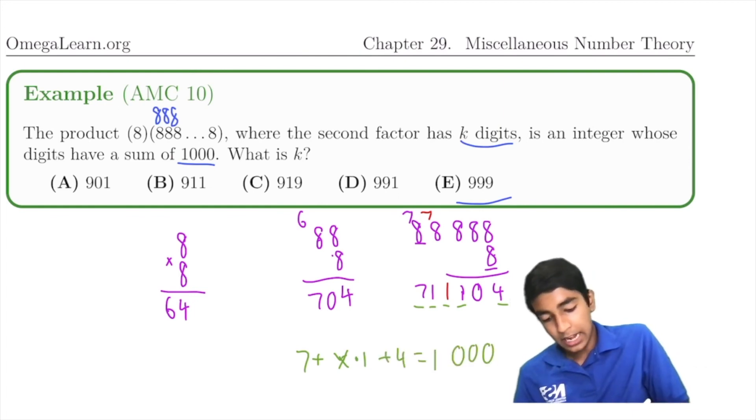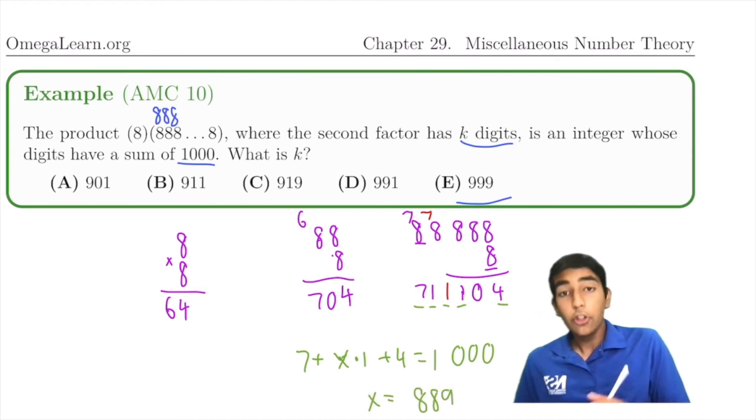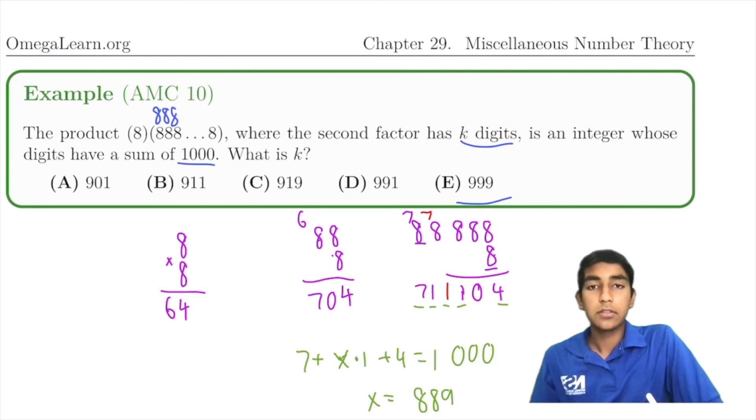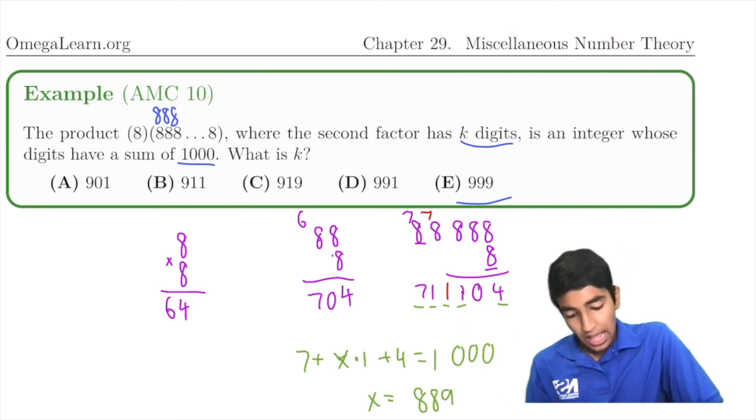We can subtract 11 from both sides to get x = 989. So there's 989 of these 1s over here.